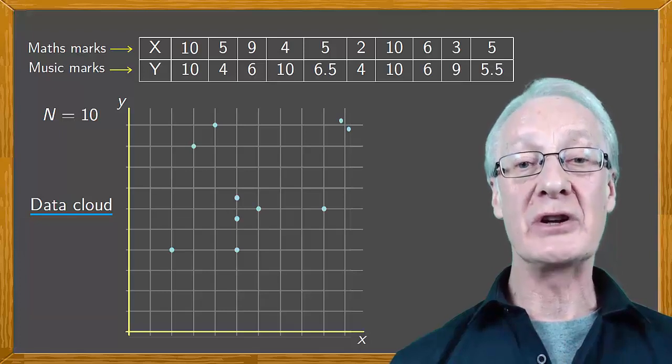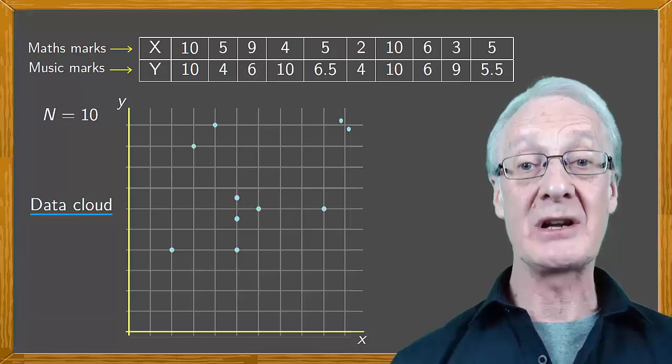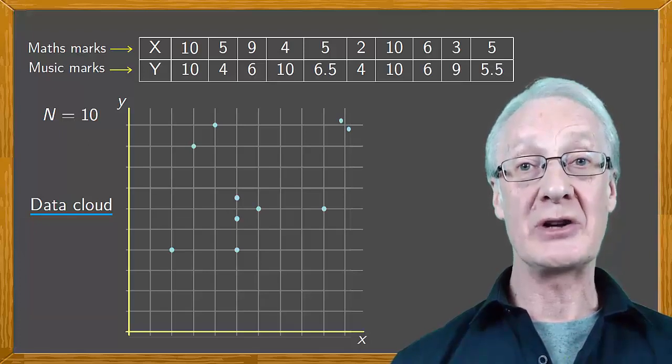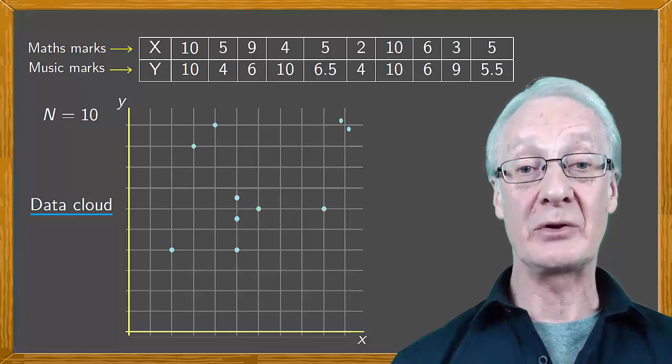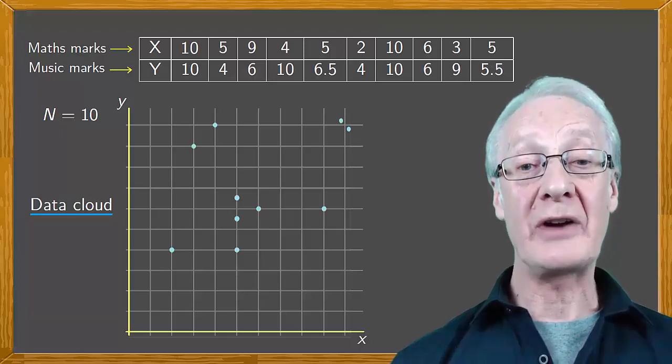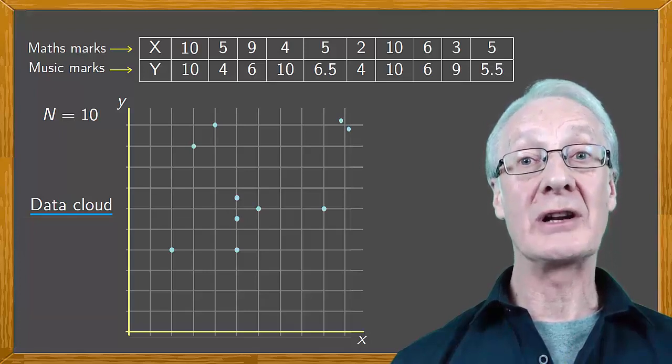We'll introduce new statistical parameters corresponding to x and y that will allow us to gauge how close is the relationship between the statistical variables. These parameters, as we'll see, are the covariance and the correlation coefficient.